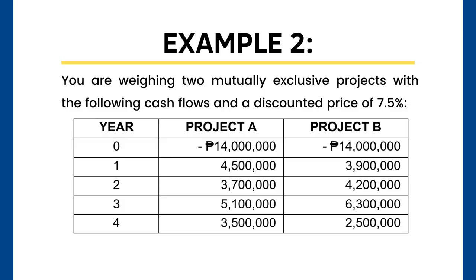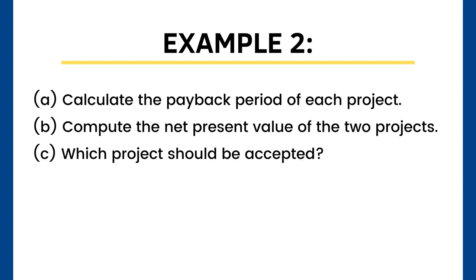Example number 2: You are weighing two mutually exclusive projects with the following cash flows and a discounted rate of 7.5%. This is for project A and for project B. Calculate the payback period of each project. Compute the net present value of the two projects. Finally, which project should be accepted?